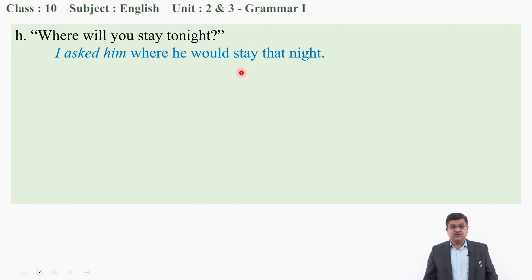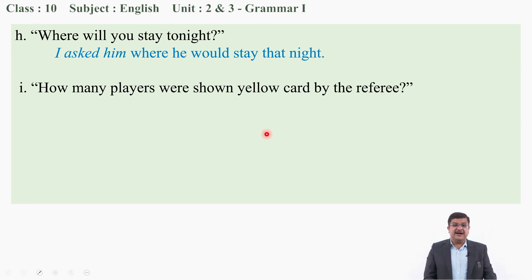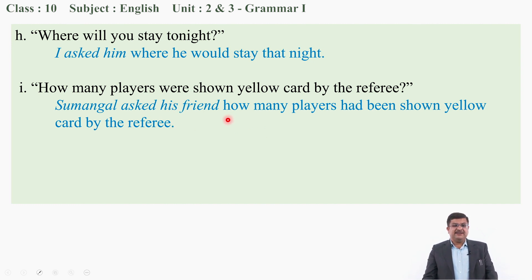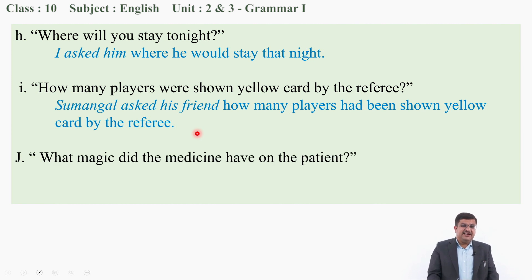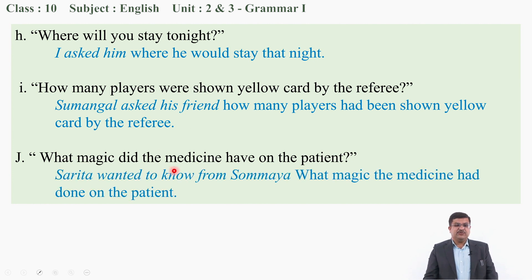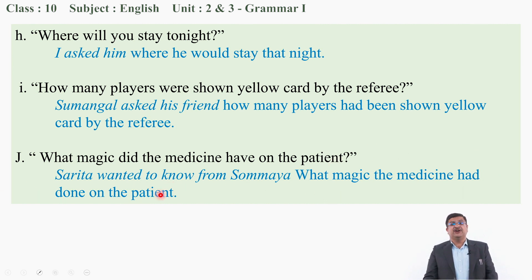'How many players were shown yellow card by the referee?' — Sumangal asked his friend how many players had been shown yellow card by the referee. Simple past becomes past perfect. 'What magic did the medicine have on the patient?' — Sarita wanted to know from Shommaya. Look at your textbook and write the remaining part: what magic the medicine had done on the patient. This is one exercise related to reporting questions and reporting commands.